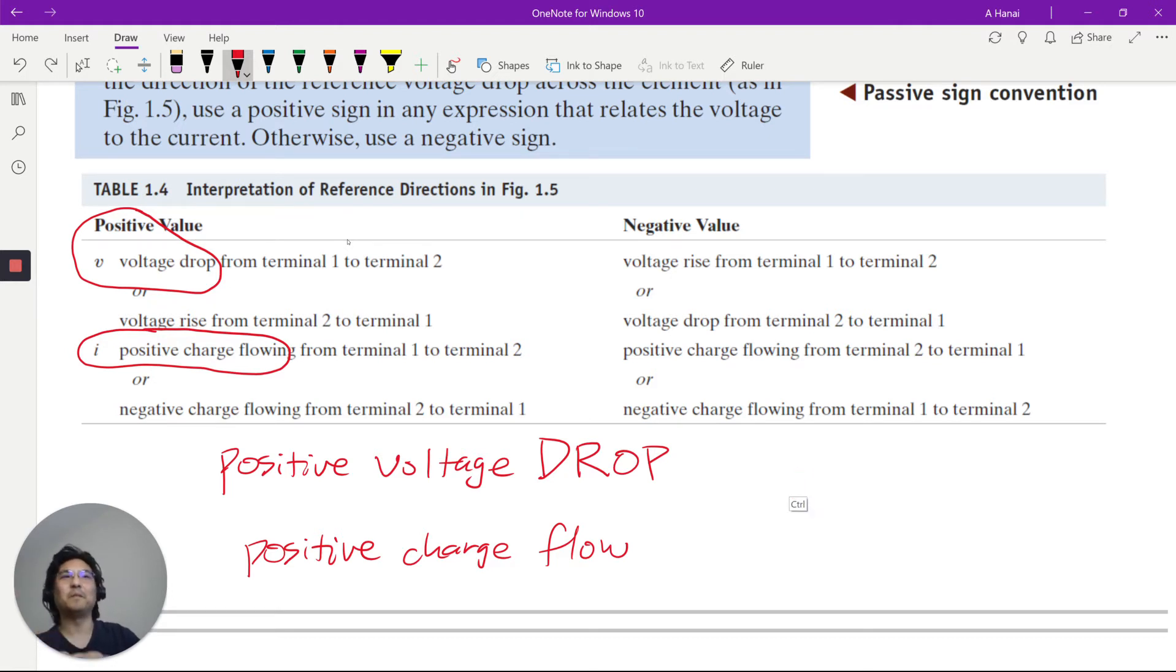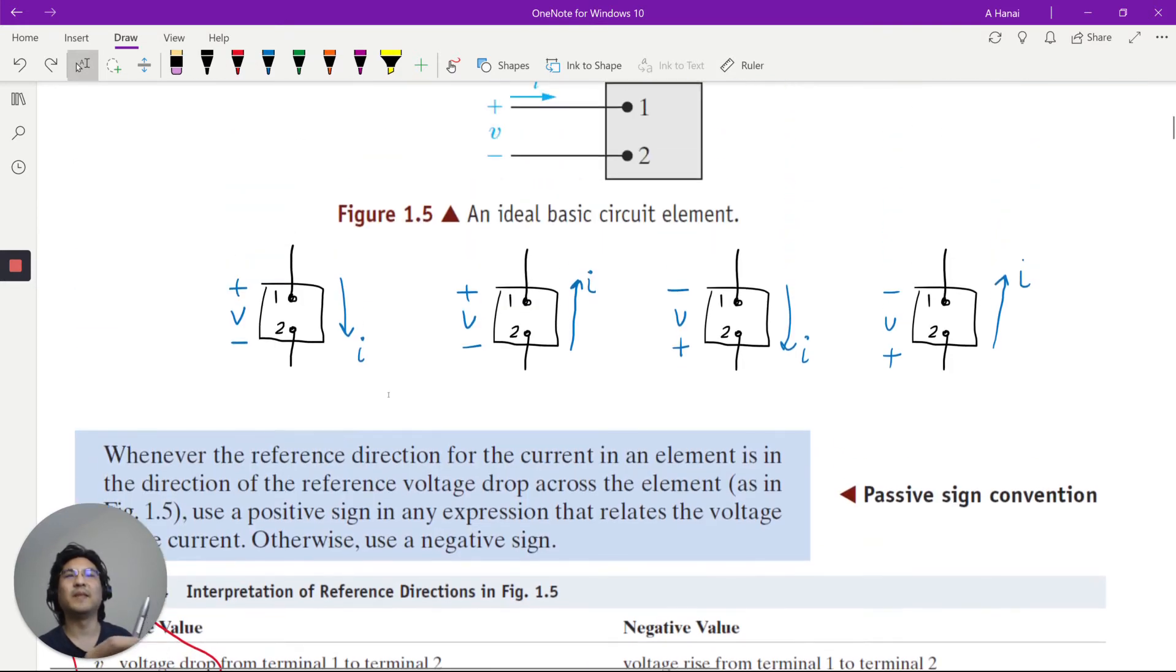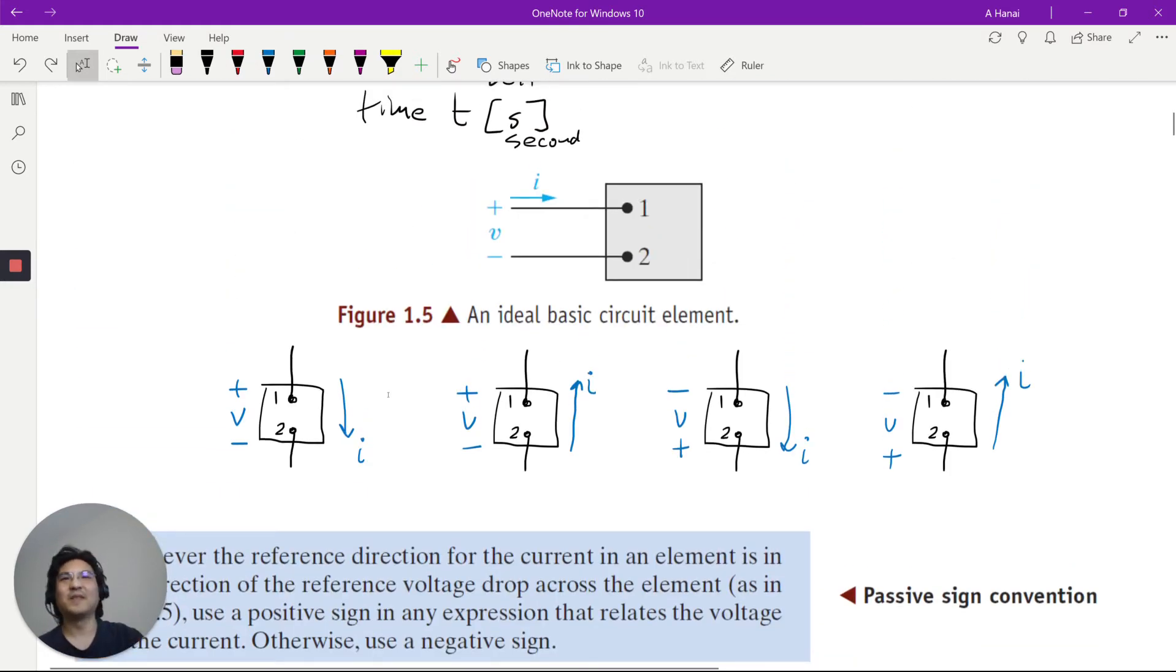If you have a circuit element, like back to these pictures, see this? Voltage drop means, right here, it's higher up here, lower up here. So this way is considered positive, because that's the direction of the voltage drop. Not voltage rise. That would be negative. Voltage drop would be considered positive.